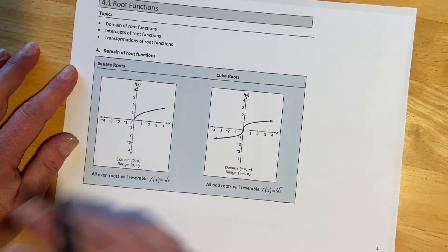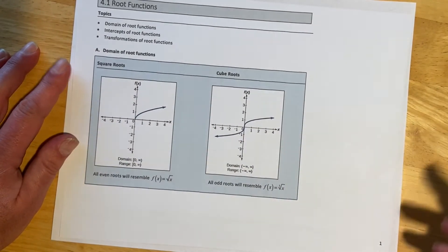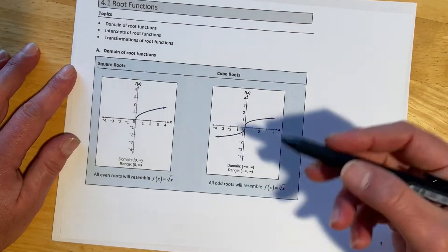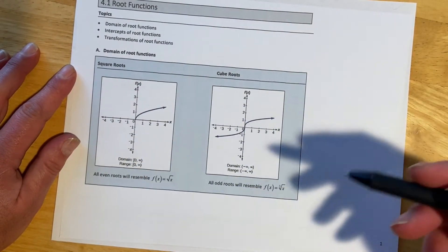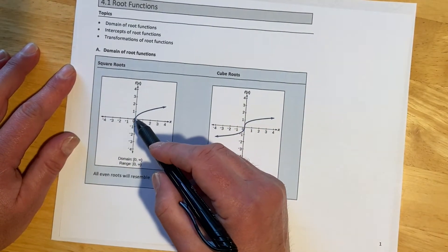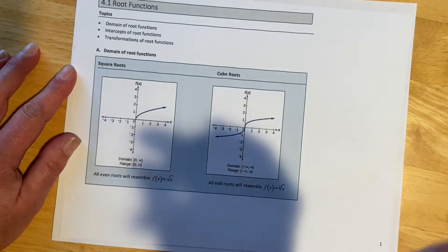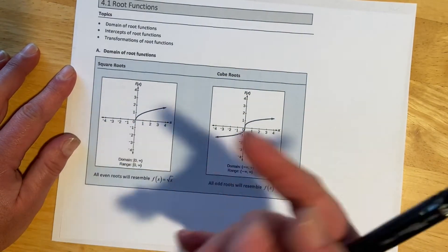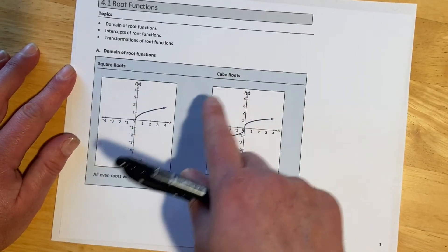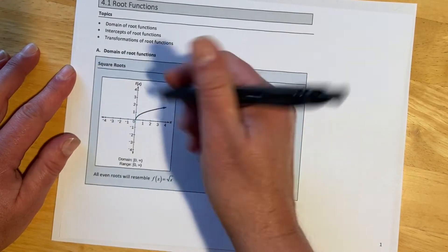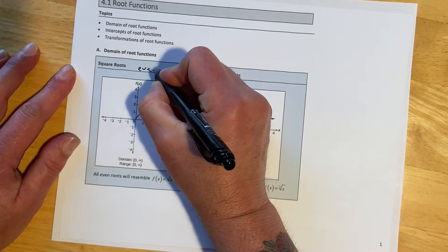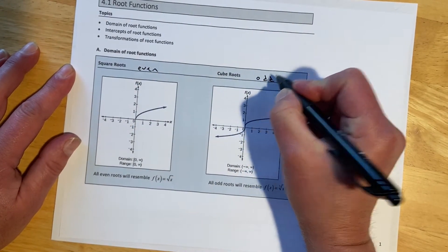There's actually an infinite number of kinds of roots because you can have a square root, a cube root, a fourth root, a fifth root — it goes on forever. But there are two basic classes: square roots and cube roots. These are going to be our even roots and these are going to be our odd roots.